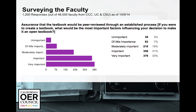One concern faculty had is how do you make sure OER textbooks have been peer reviewed, and how do we establish that process? When asked if peer review were in place, 3% said it's not important, 19% say moderately, and 33% say it's very important. That tasks us with coming up with protocols and structures for creating a rigorous peer review.